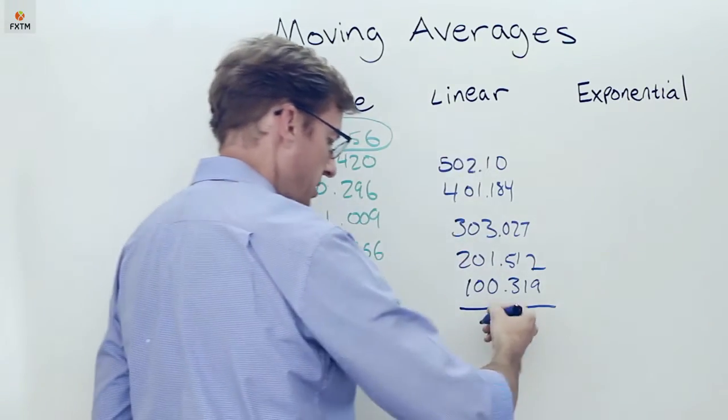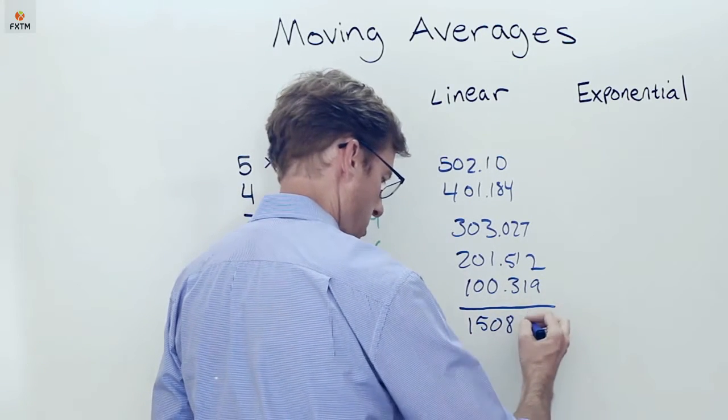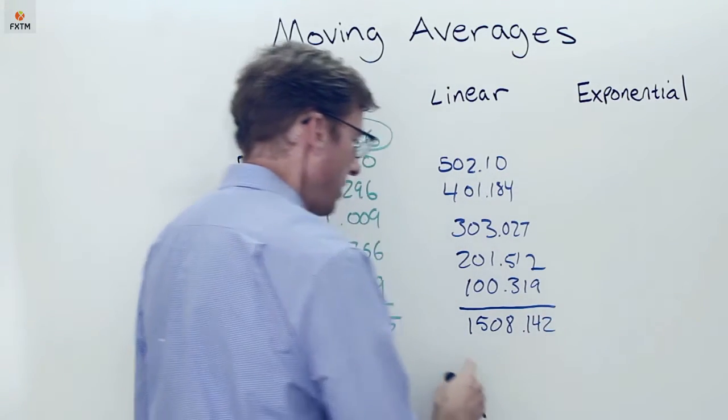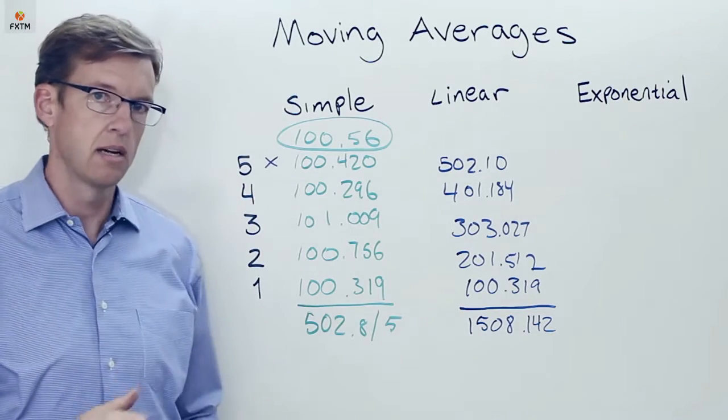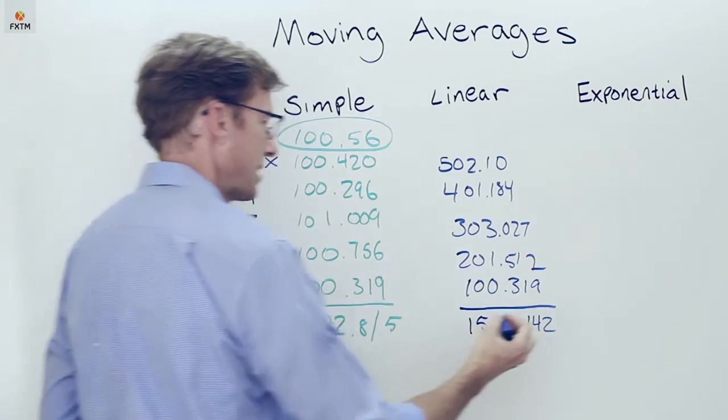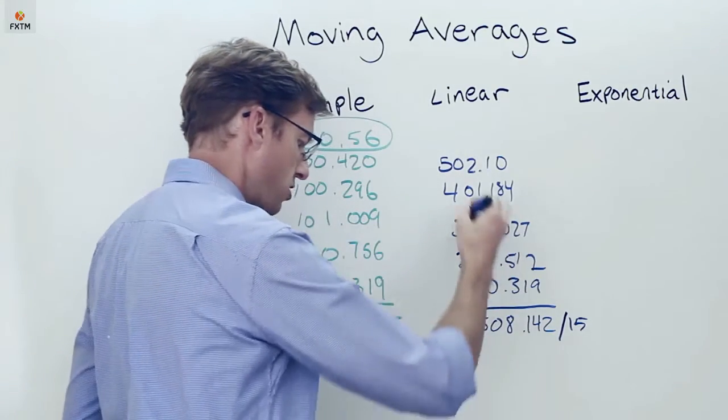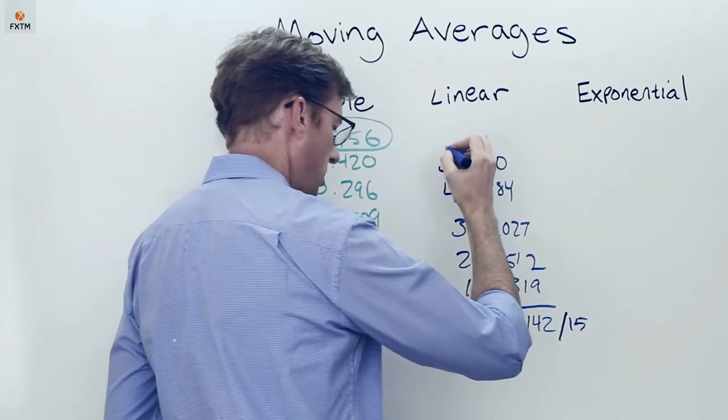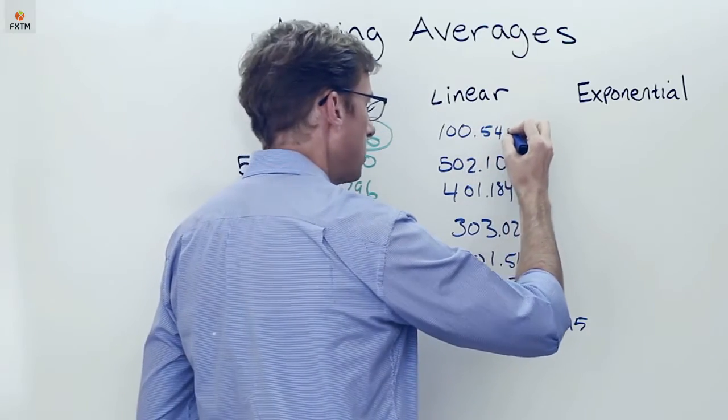So if we were to total all these up, then I'm going to get a value of 1508.142. Now, from here, what I'm going to do is I'm going to divide it by the sum of all of these day numbers. So the day values, if I were to sum that all up, that's actually 15. So I'm going to divide this by 15. It's going to give me a linear moving average number for today of 100.548.